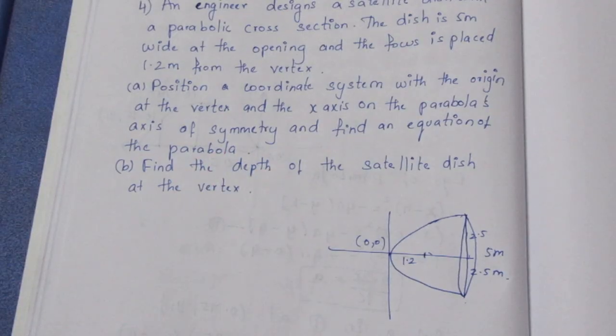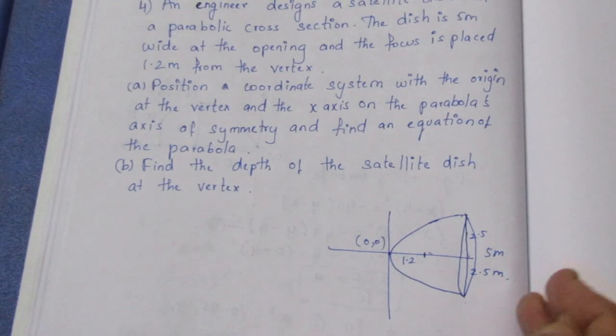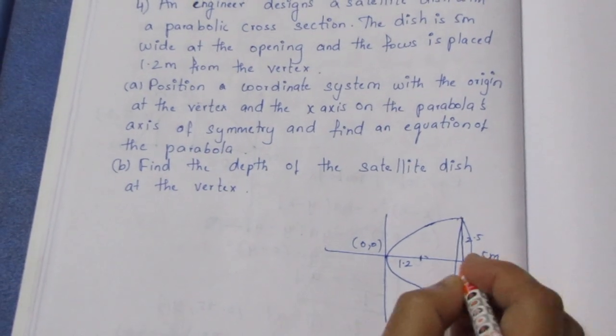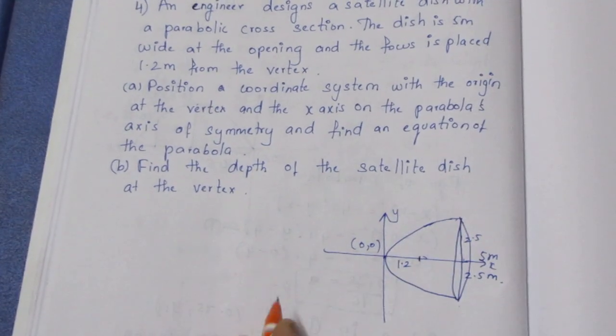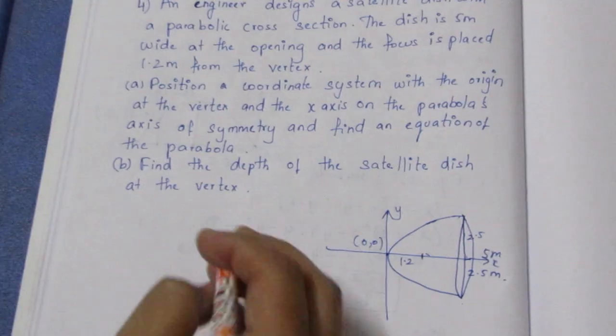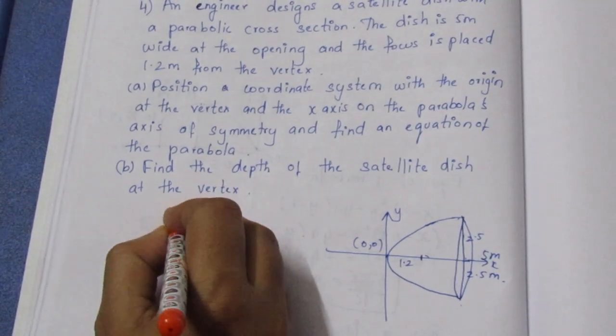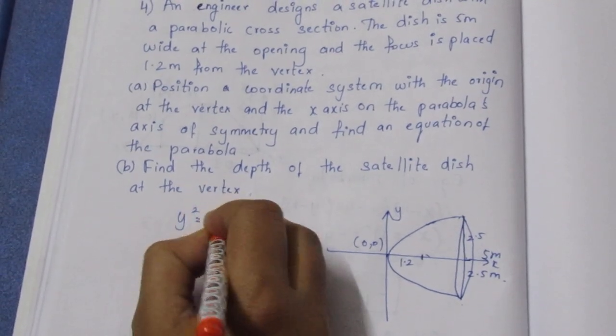Find the equation of the parabola. If you look at the general equation, the opening side is the x-axis. This is the x-axis, this is the y-axis. If you look at the opening, there is power 1. So y-square equal to 4ax.